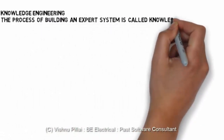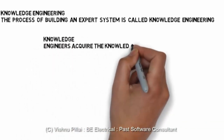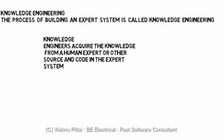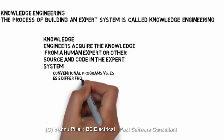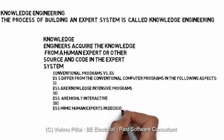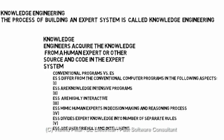Knowledge engineering is the process of building an expert system. Knowledge engineers acquire knowledge from human experts or other sources and code it into the expert system. They get the knowledge necessary for the working of the expert system in any domain — from experts or from sources like encyclopedias — and represent it in the knowledge base in a way that is easy for computer programs to understand.